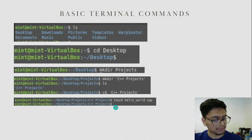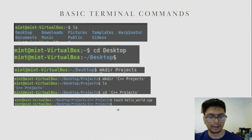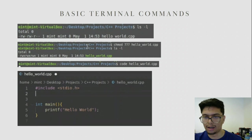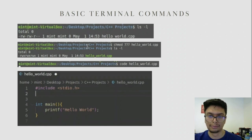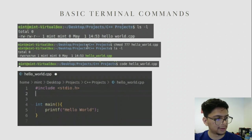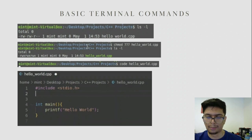Once you're in that directory, to create a new editable file you can type in the terminal: touch hello-world.cpp. This will create a new file. To see what permissions the file has, you can type ls -l. In this directory there's only one file — hello-world.cpp — that we just created using the touch command. As you can see, it says rw-rw-r, meaning it's readable and writable but not executable.